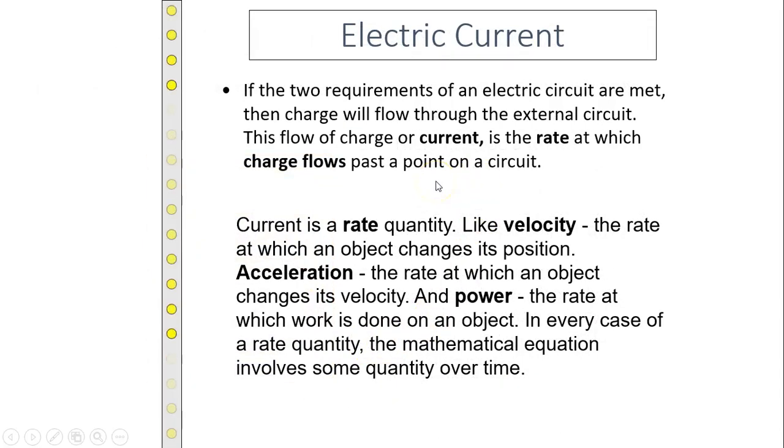So, electric current: If the two requirements of electric circuit are met, then charge will flow through the external circuit. This flow of charge is called current, or the rate at which charge flows past a point on a circuit—so how many charges,